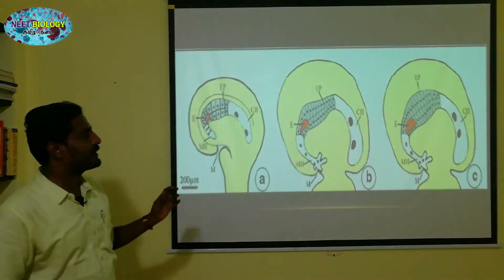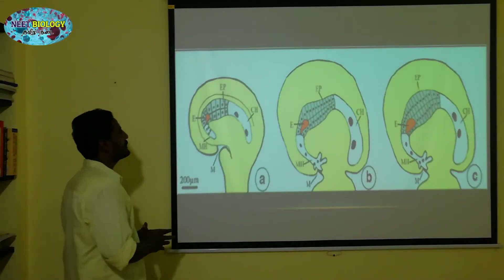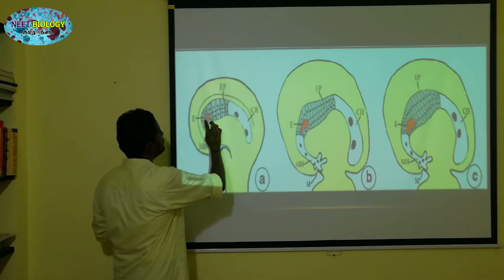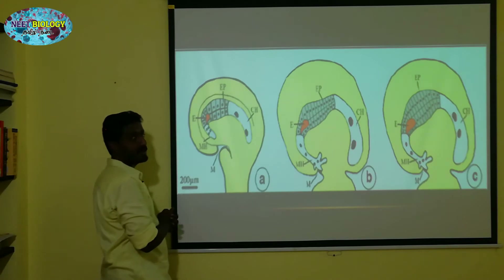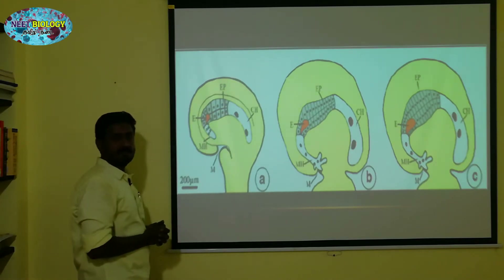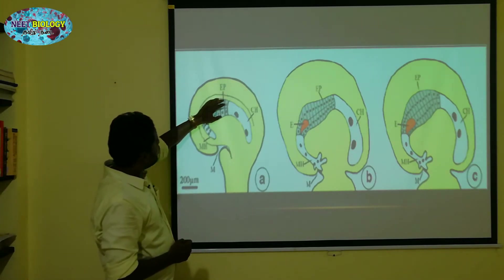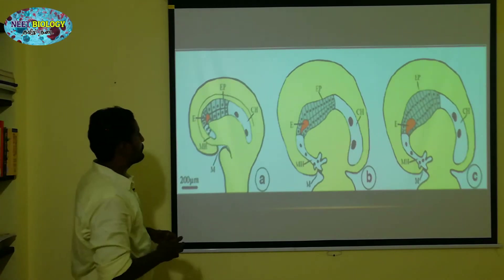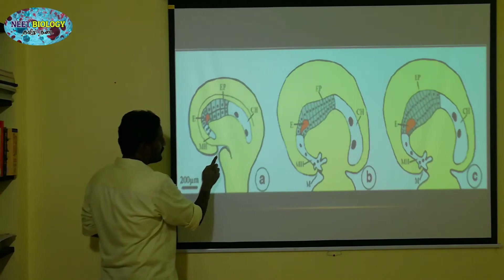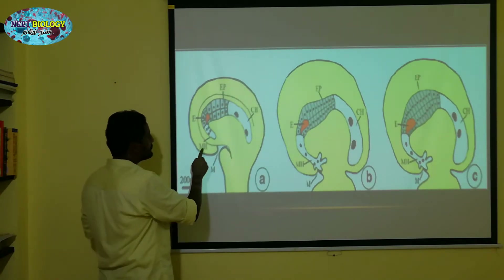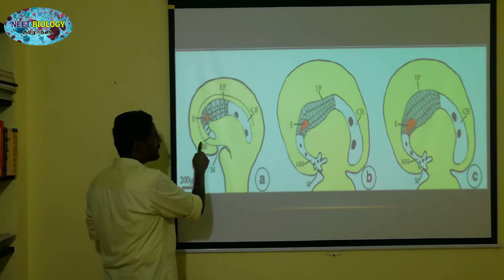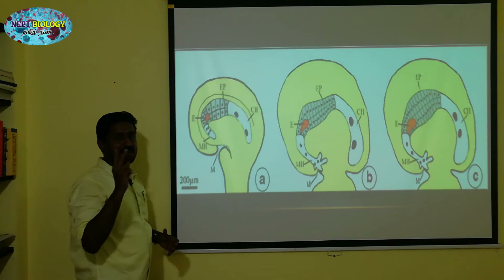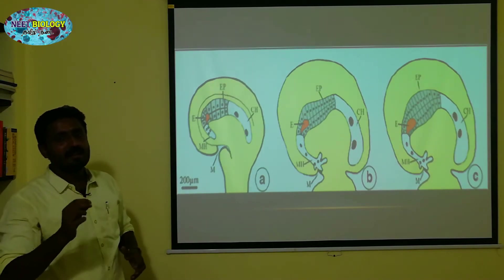Look at this diagram. You can see the diagram — this is an ovule. This ovule contains an embryo. That's the endosperm. Now, this is the micropylar. Micropylar is a haustoria. This is also a haustoria and chalaza region. You can see that there is a haustoria.